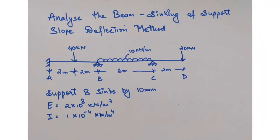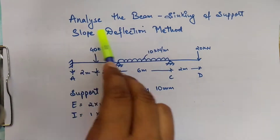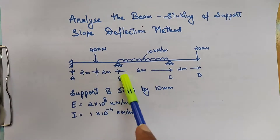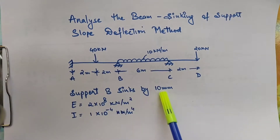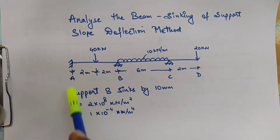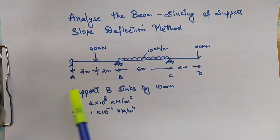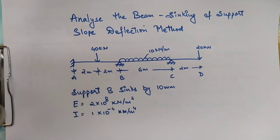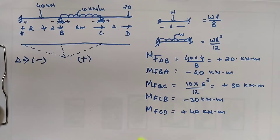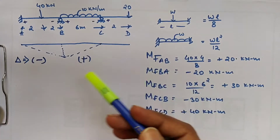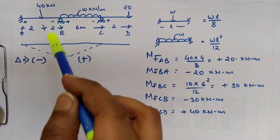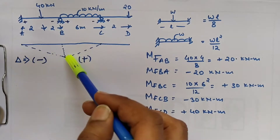Welcome to my channel. In this video we are going to analyze the beam using the slope deflection method with support settlement. The E and I values are given. In this question, the B support is sinking, so the geometry will be something like this.